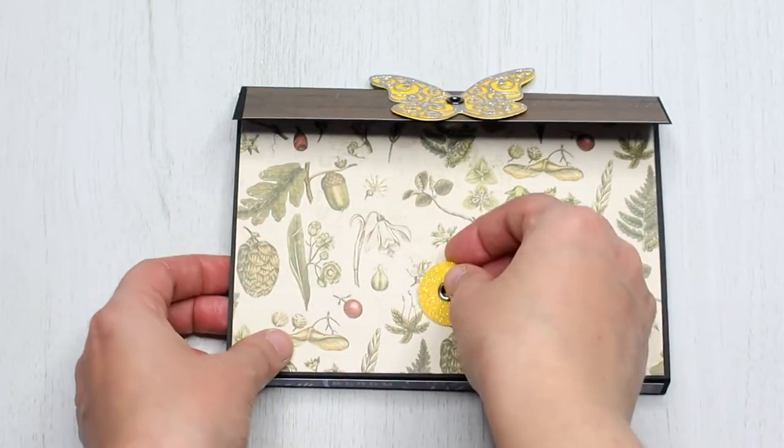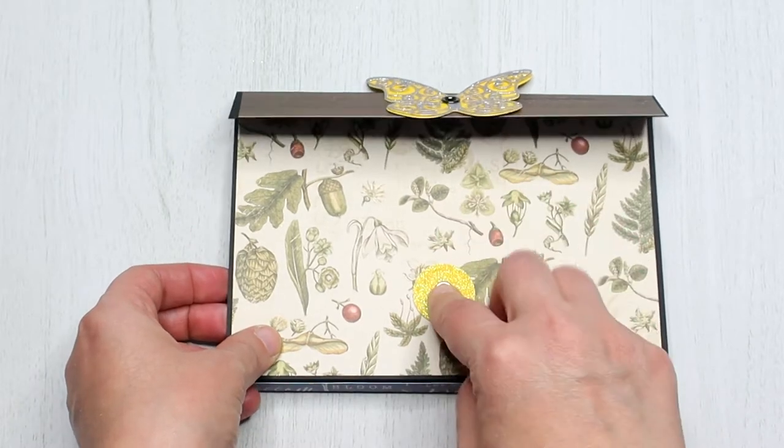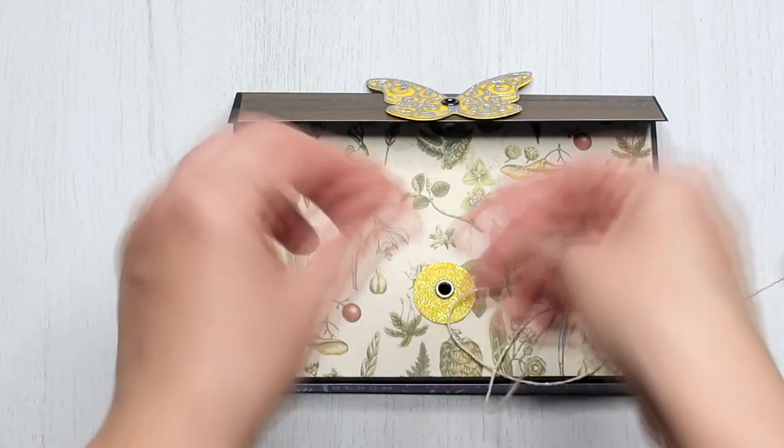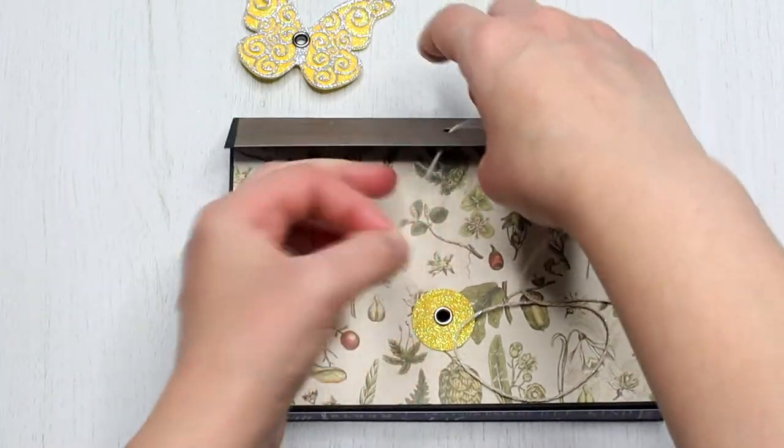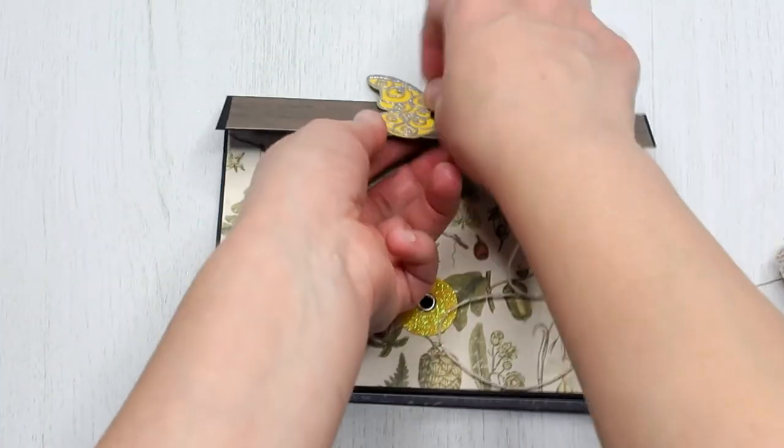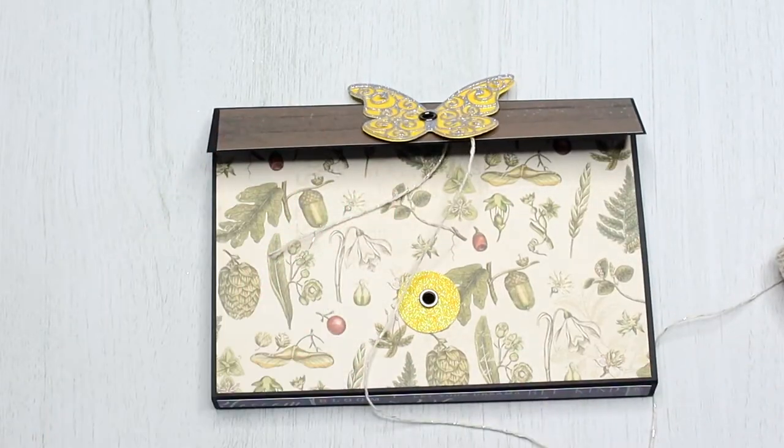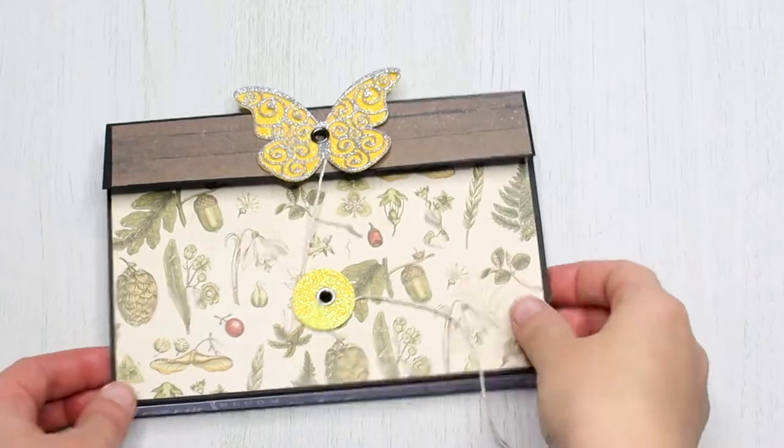Added an eyelet through it. For the other end I used a palm punch to create a circle which I affixed using an eyelet as well. Then pass the string through the hole of the flap. Affixed the butterfly into the flap and close the eyelet with my crop-o-dile.